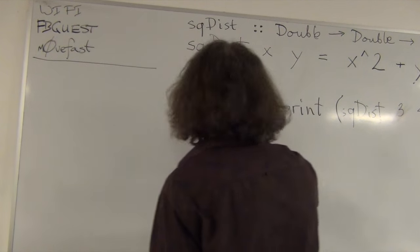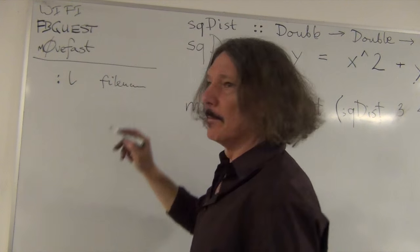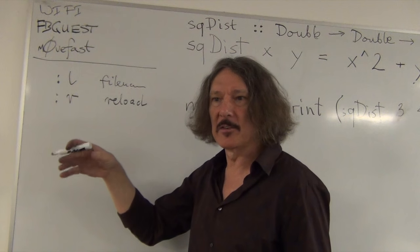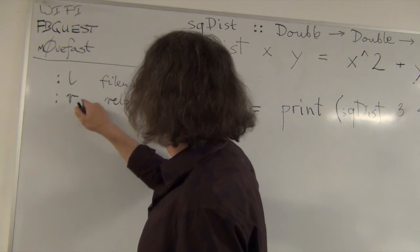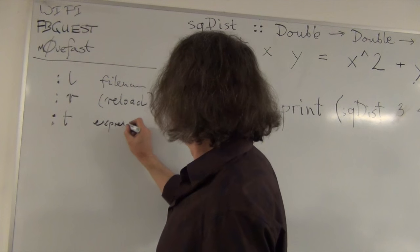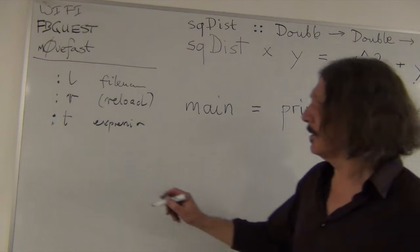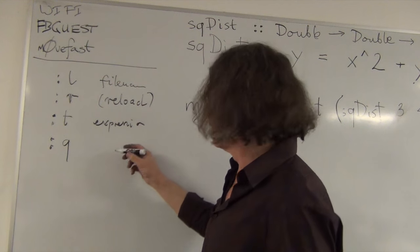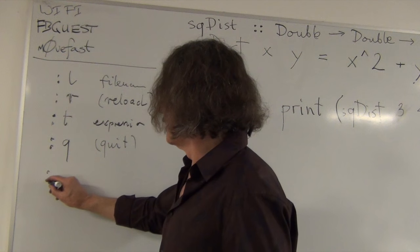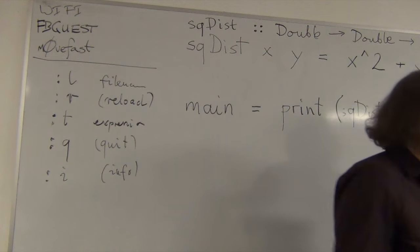So, GHCI commands that are important. Here. Colon L and file name. That's load a file. Colon R. Reload. So, if you modify the file outside of GCI, you want to reload it. You do this. You don't have to pass any argument to it. Colon T followed by an expression. We'll give you the type of expression. We'll give you the type of the expression. Anything else that we need? Well, colon Q. Colon Q is very important because otherwise you will never exit this. Right? So this is great. Colon I.